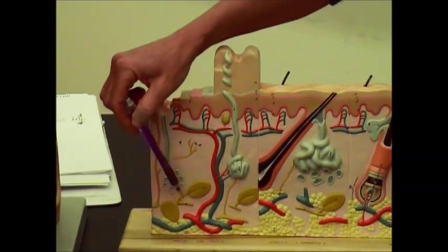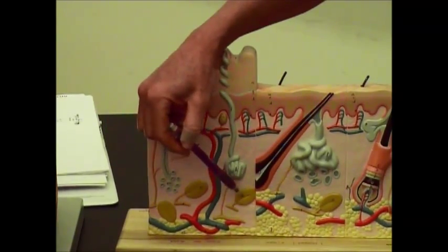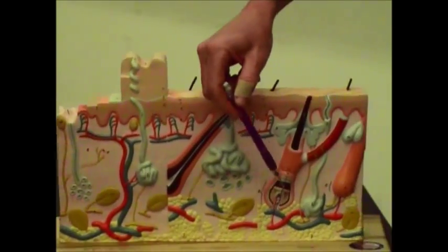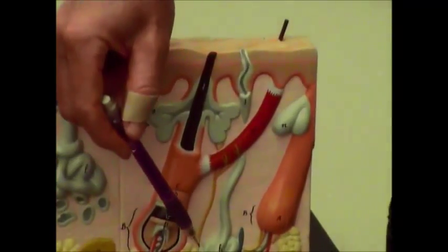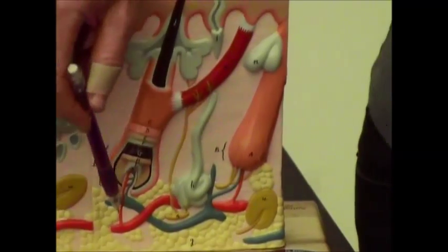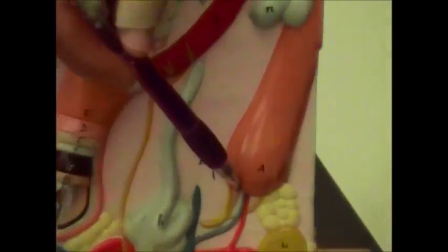But these are deep pressure receptors found down deep in the dermis. And then, you also have little nerve fibers going to your hair follicle like right in here.